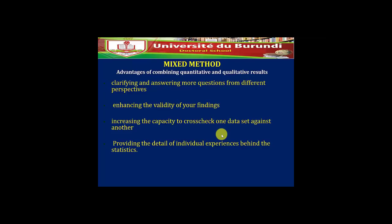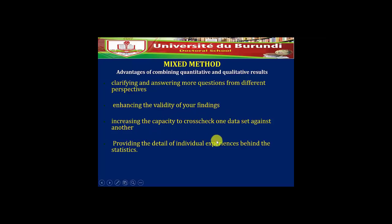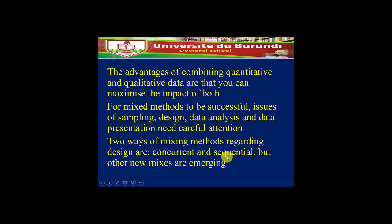What about when we join quantitative and qualitative together? That's called mixed methods — combining the two. The benefits include: clarifying and answering more questions from different perspectives; enhancing the validity of findings; allowing you to cross-check one data set against another; and providing the details of individual experiences behind the statistics. You join them in mixed methods to maximize the impact of both. For mixed methods to be successful, issues of sampling, design, data analysis, and data presentation need to be carefully paid attention to.